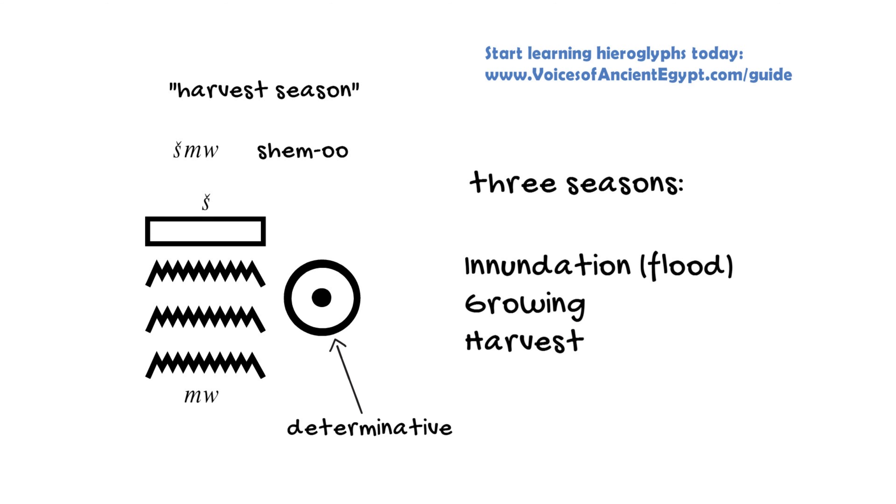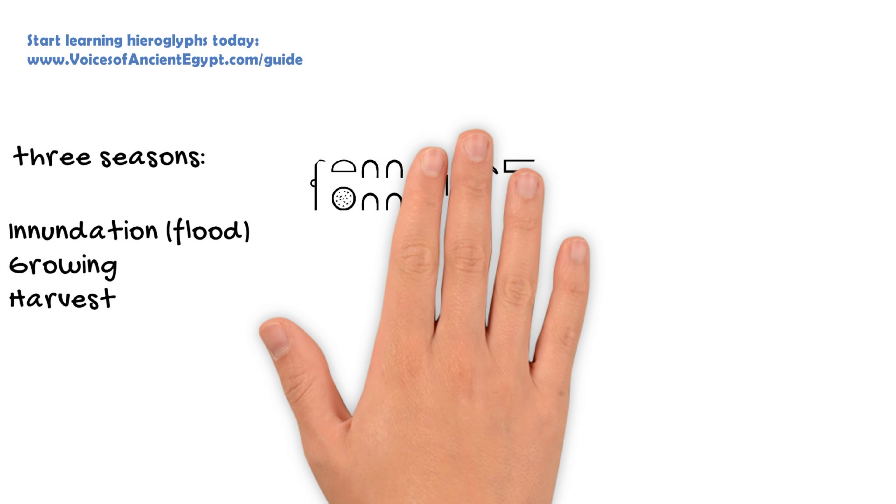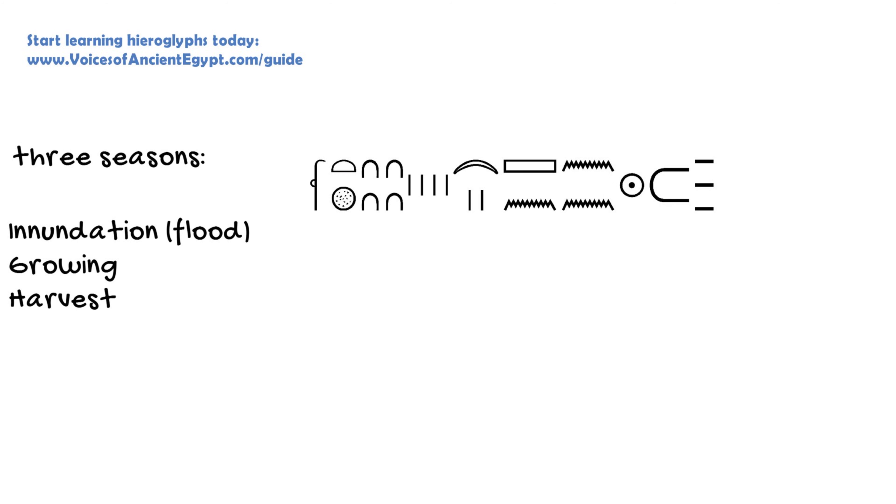And if you combine this with the numbers we dealt with recently and words for year and so forth, this gives you a lot of the components that you'll see in dates in ancient Egyptian.